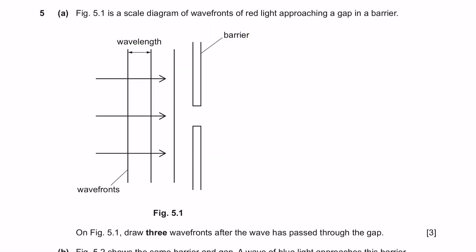Question 5a. Figure 5.1 is a scale diagram of wavefronts of red light approaching a gap in a barrier. On figure 5.1, draw 3 wavefronts after the wave has passed through the gap. When wave passes through a narrow gap, the wave will spread out. This effect is called diffraction. So make sure you have drawn 3 wavefronts and make sure that the wavelength of the wavefronts is equal to before it went through the barrier.